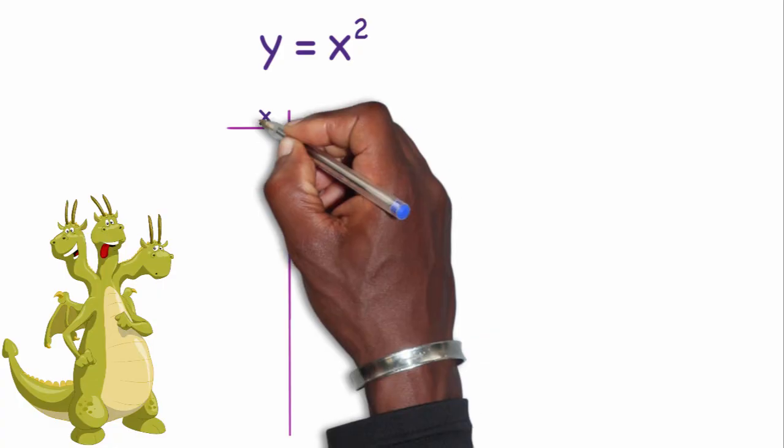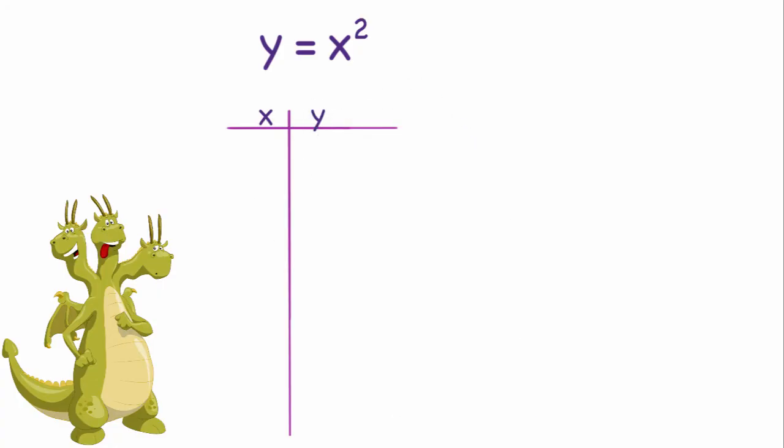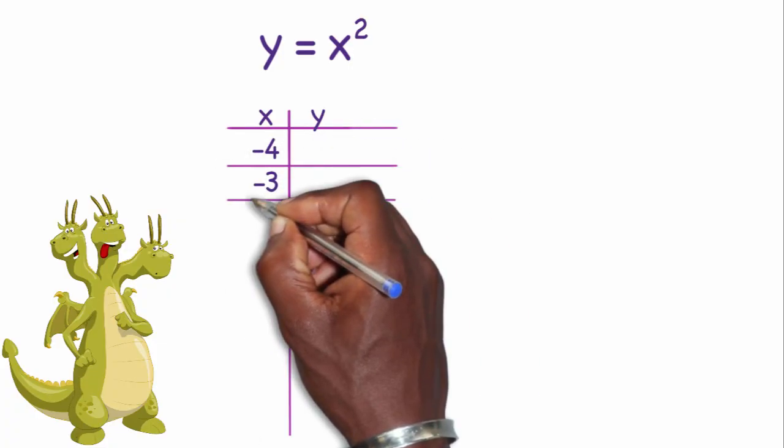I'm going to make my x and y table and I'm going to choose my x values. I'm going to pick the numbers from negative 4 up to 4.